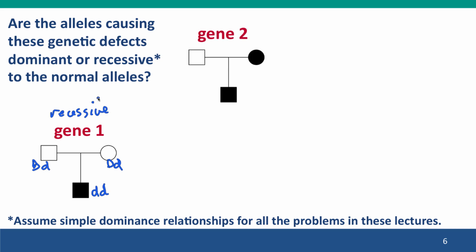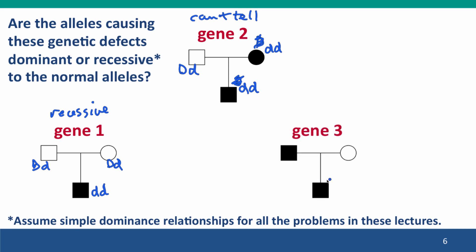Here's another one — gene two. Can you tell here: is this allele causing the defect dominant or recessive? Now the mother is showing the phenotype. Does this mean that the allele causing the phenotype isn't necessarily dominant? No, it doesn't. In this one, we can't tell. It could be dominant, or it could be that she is also homozygous recessive. It could be that she's got the big D allele which causes the defect and so does the child, or it could be that she is homozygous recessive and the father is heterozygous — in that case, it would be a recessive allele. Here's a third one — same thing, except now the father is carrying it, and again, we can't tell.